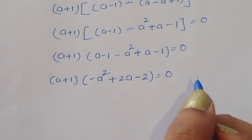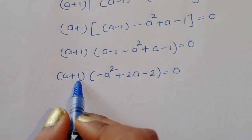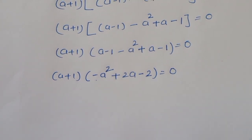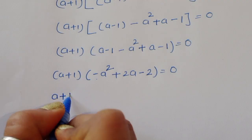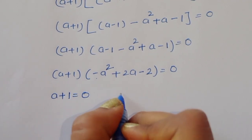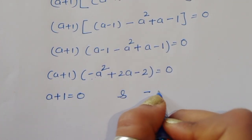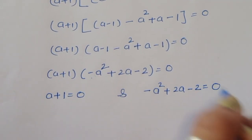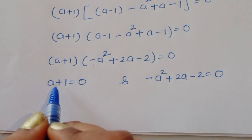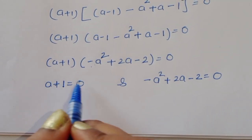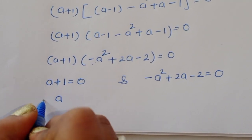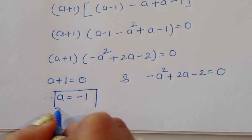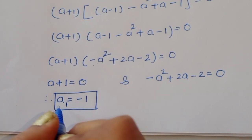We now have two equations: first, a plus 1 equals 0; and second, minus a squared plus 2a minus 2 equals 0. From the first equation, a plus 1 equals 0, so therefore a₁ equals minus 1. This is the first value of a.